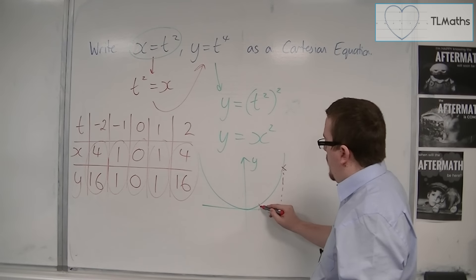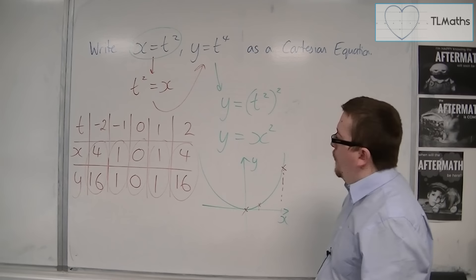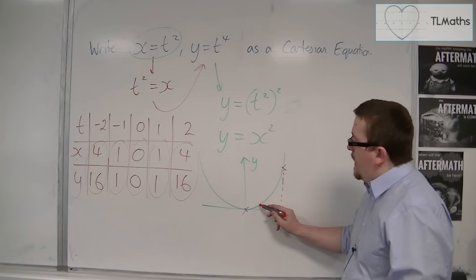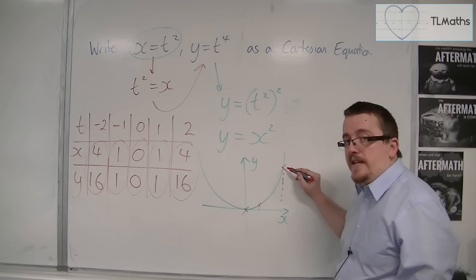We'd have 0, 0, which would be that point. Then we'd have 1, 1 again. Then we'd have 4, 16 again.